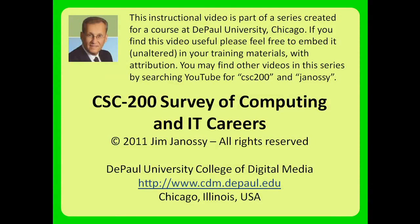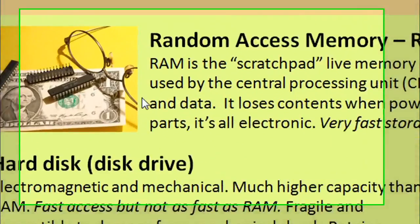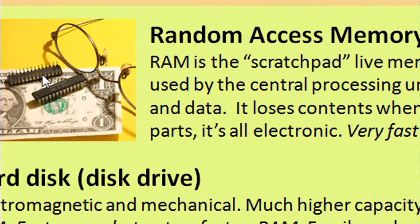Let's take a look at some of the components of computers in the physical sense — some of the hardware. This is a little rundown on the different types of memory. Random access memory, represented by chips like this, is semiconductor memory that needs power.